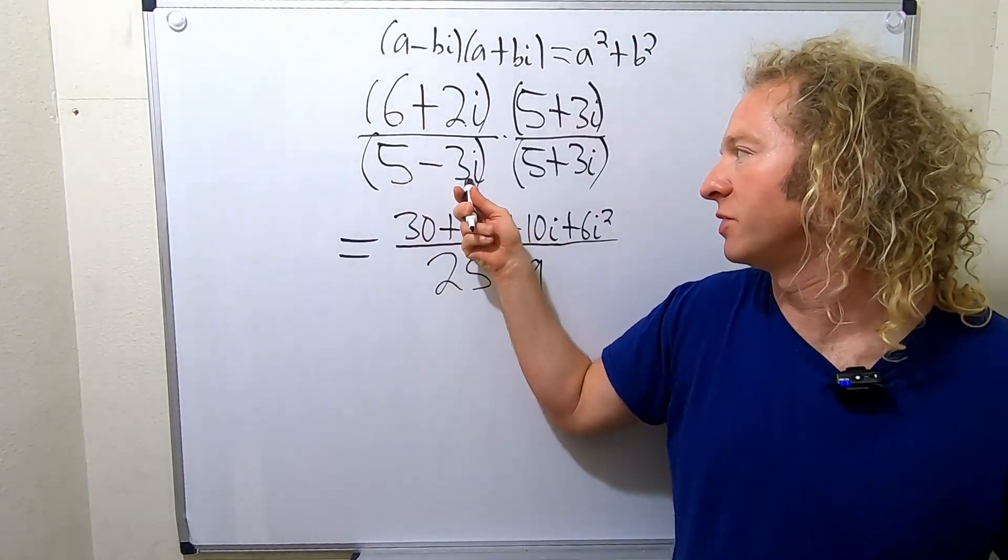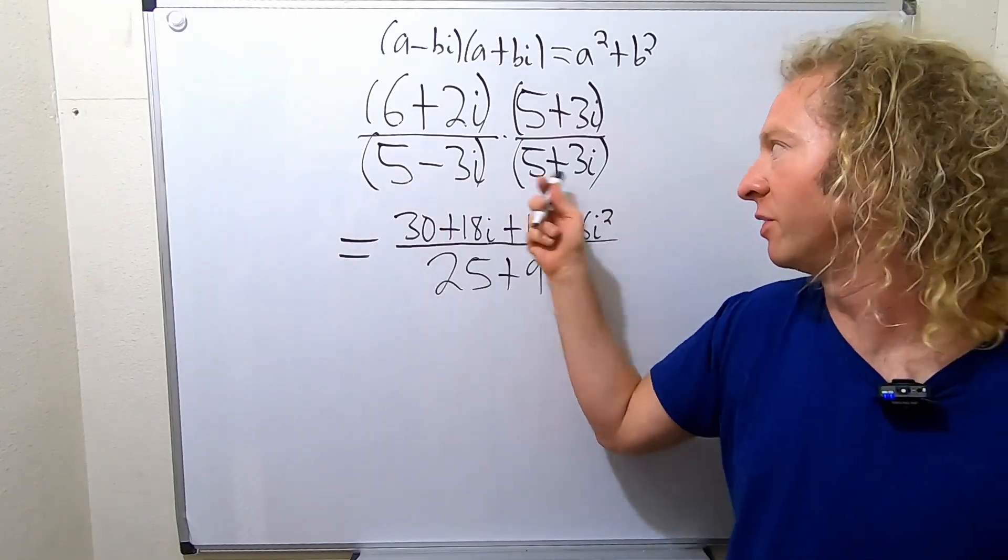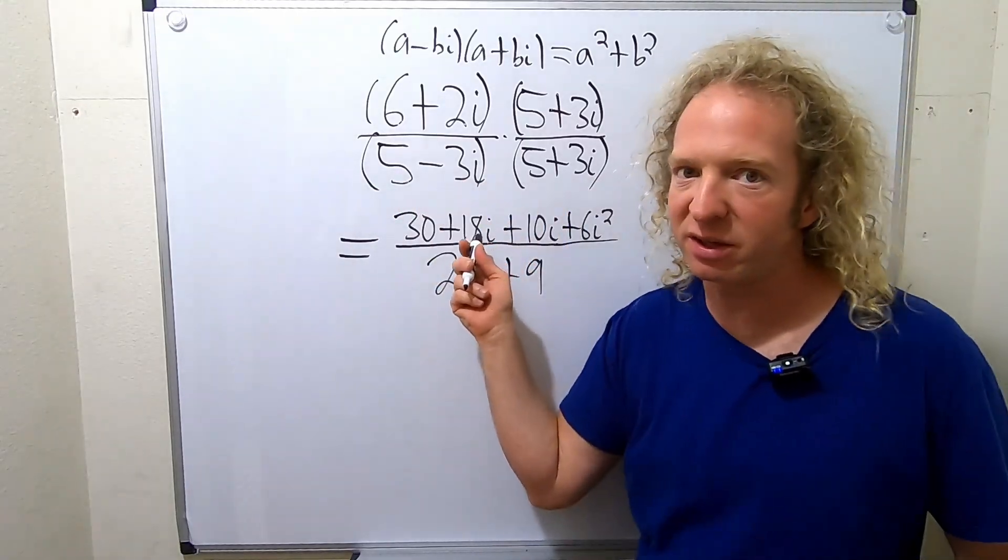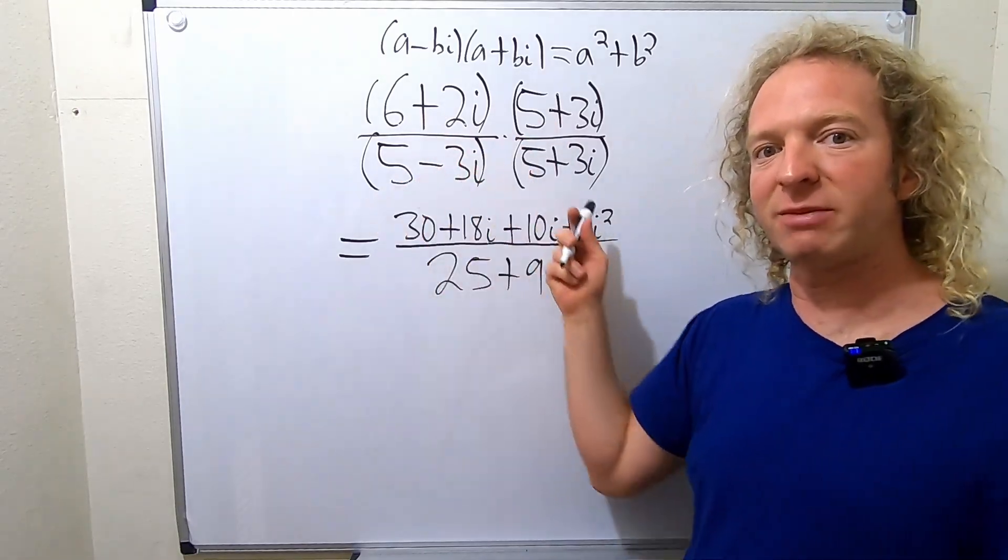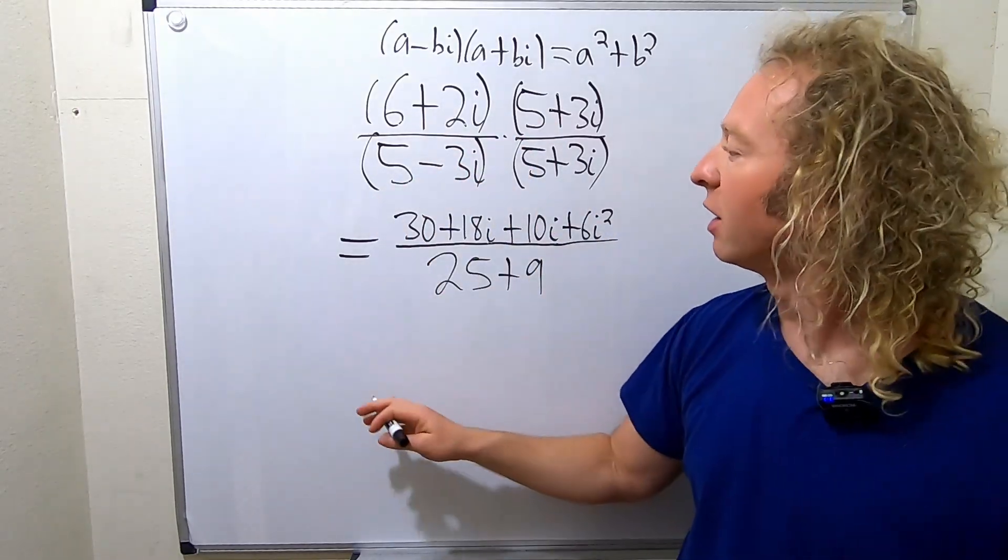So again, you basically just square these and add them. So you square the 5 and you square the 3 whenever it looks like this. Now it has to look just like this. Notice we didn't do it up here because these are different. They have to be a complex number times its conjugate for this to work. All right, let's keep going.